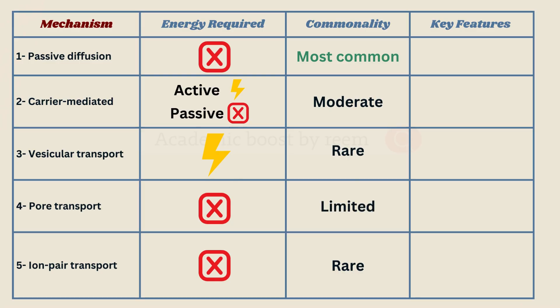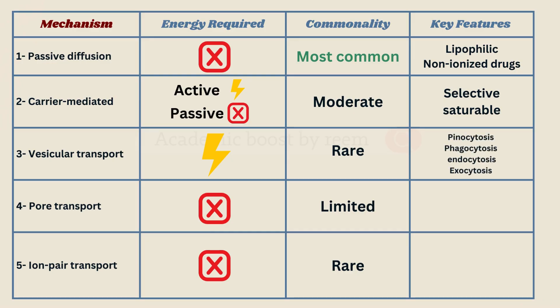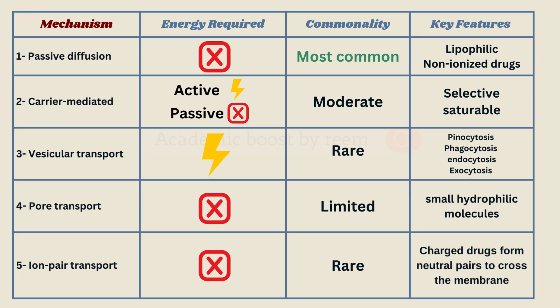Passive diffusion allows lipophilic and non-ionized drugs to move. Carrier-mediated transport is selective for the drug and saturable. Vesicular transport has four subdivisions. Pore transport allows only small hydrophilic molecules. And lastly, ion-pair transport neutralizes charged drugs by forming neutral pairs, enabling them to cross the membrane.